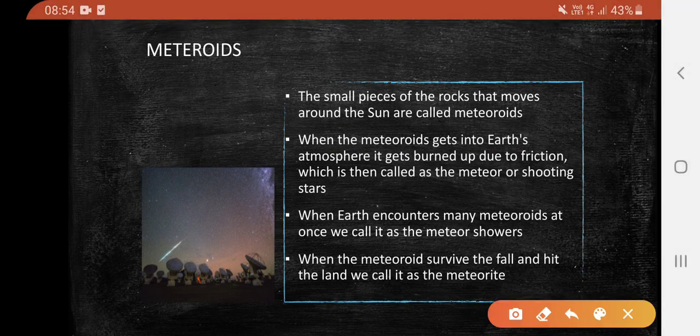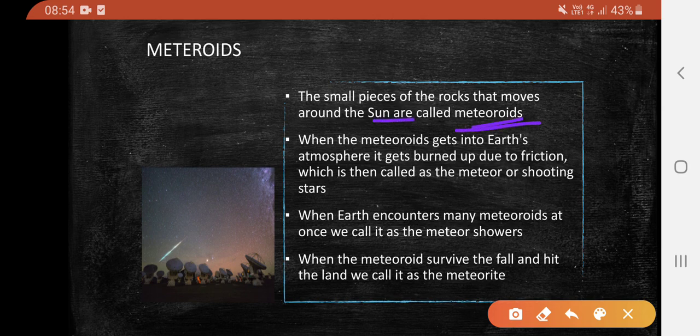Small pieces of rocks that move around the sun are called meteoroids. When meteoroids enter the Earth's atmosphere, they get burned up due to friction and are called meteors or shooting stars. When the Earth encounters many meteoroids at once, we call it meteor showers.